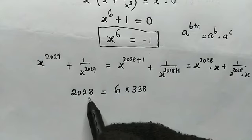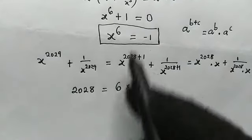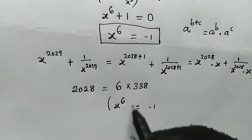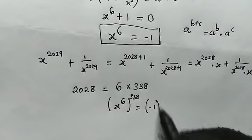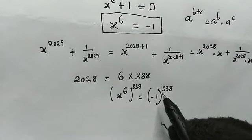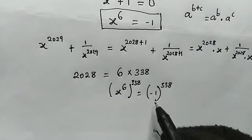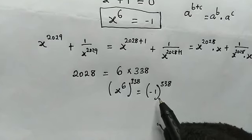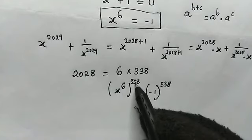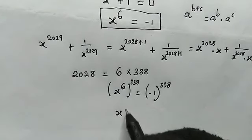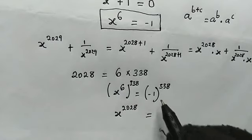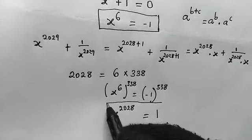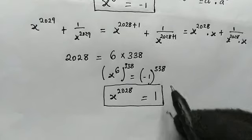Since 2028 is a multiple of 6, let's go back to x to the power of 6 equals negative 1 and raise both sides to the power of 338. Note that 338 is an even number, and negative 1 to the power of an even number is 1. On the left-hand side, 6 times 338 is 2028, so we get x to the power of 2028 equals 1.